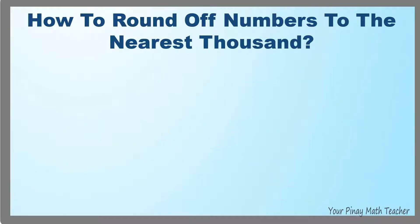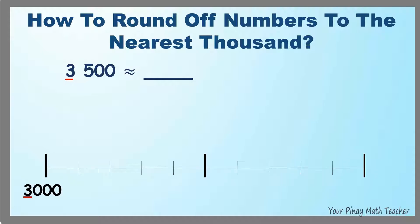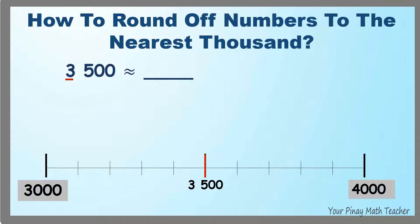How to round off numbers to the nearest thousand? For example, 3,500. This number has a thousands digit of 3 and is in between 3,000 and 4,000. Which is nearer to 3,500 — 3,000 or 4,000? To which number should we round off 3,500?